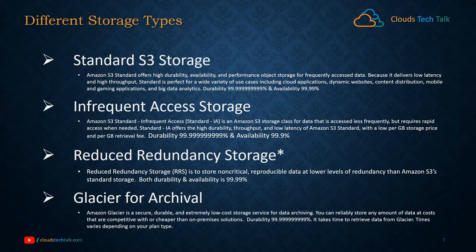The first is standard S3 storage. Amazon S3 standard offers high durability, availability, and performance object storage for frequently accessed data. Because it delivers low latency and high throughput, standard is perfect for a wide variety of use cases including cloud applications, dynamic websites, content distribution, mobile and gaming applications, and big data analytics. Its durability is 11 nines and availability is 99.99%. Standard S3 is the backbone of any cloud solution on AWS — you cannot architect without it.